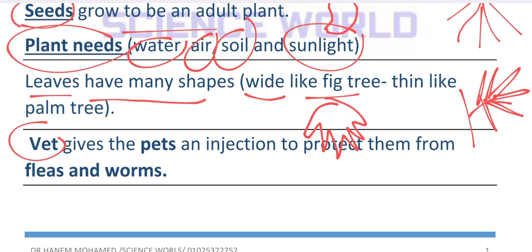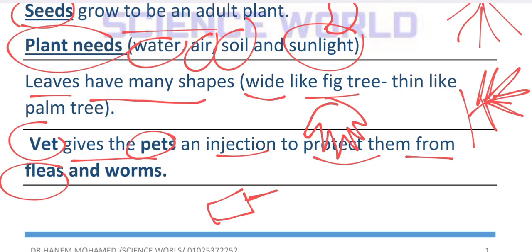Let's talk about the doctor called a vet. What is the meaning of vet? A vet gives pets, like cats, an injection — like a needle — to protect them from fleas, insects, and worms inside the stomach. So the vet is the doctor who gives pets injections to protect them from fleas and worms.